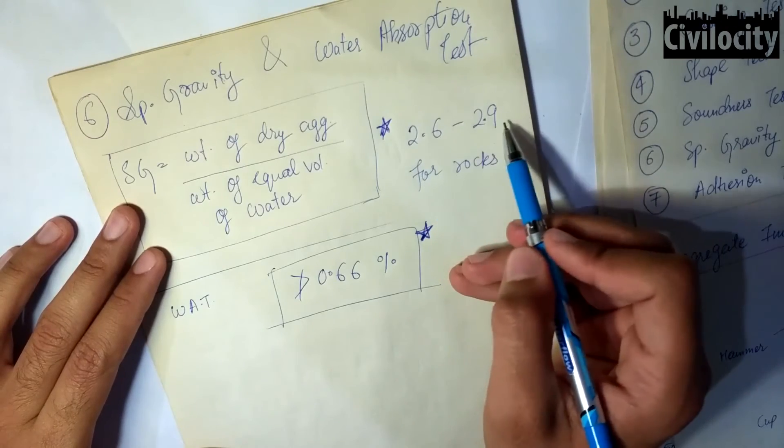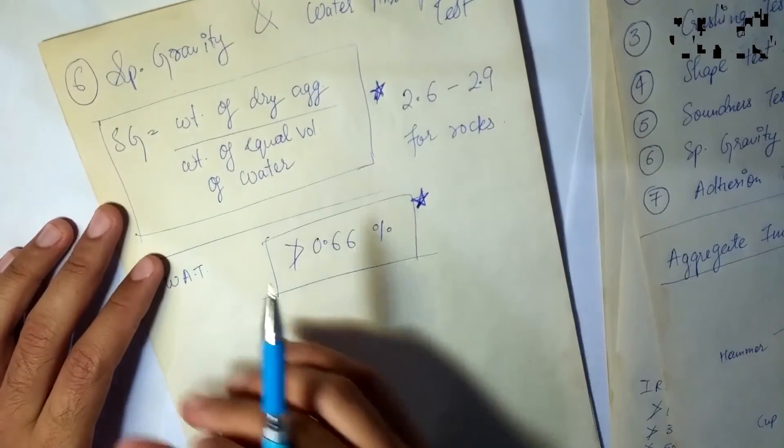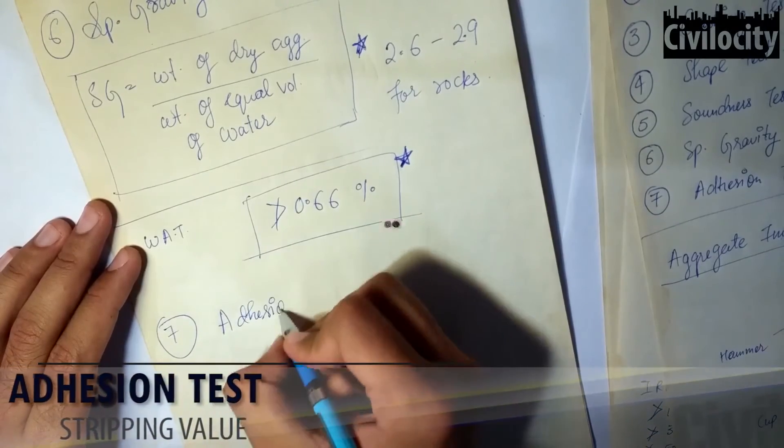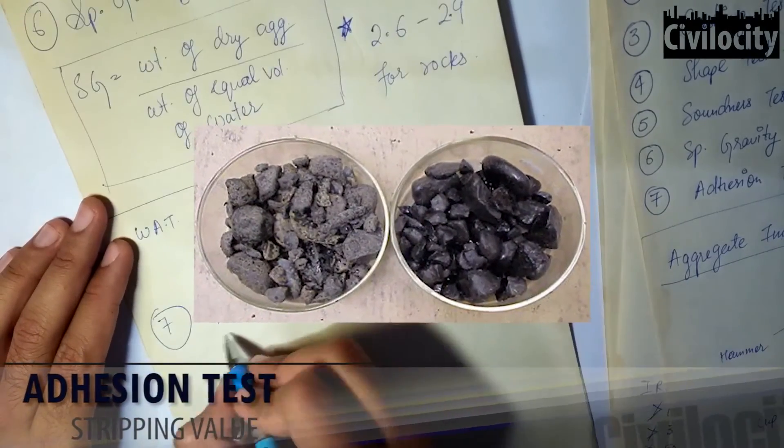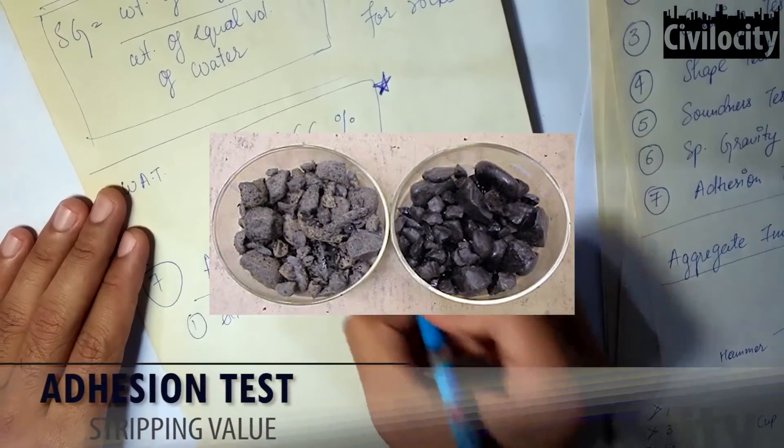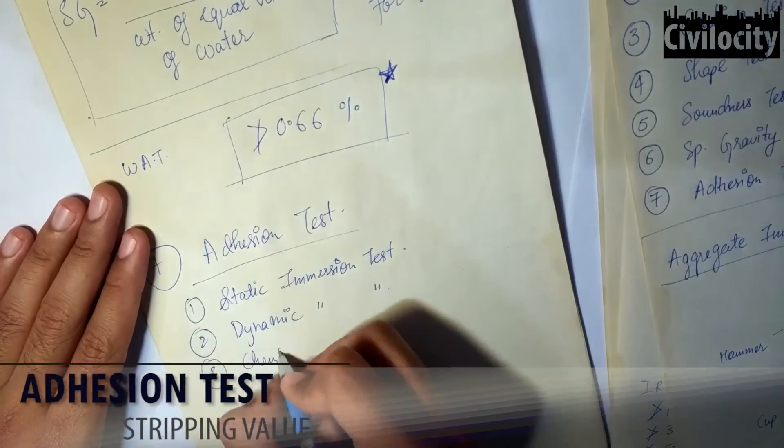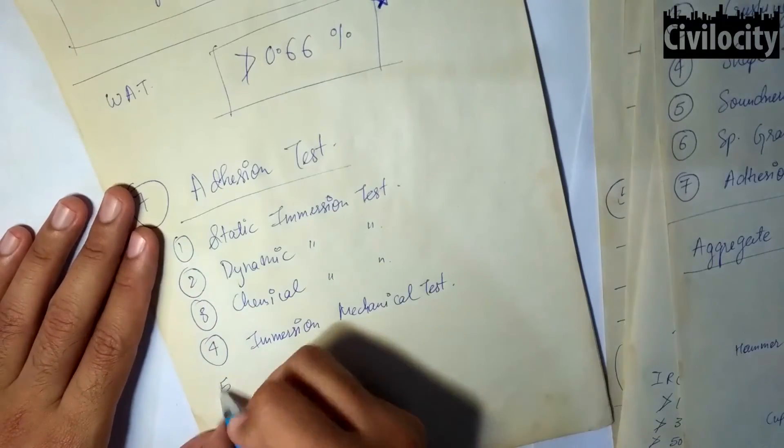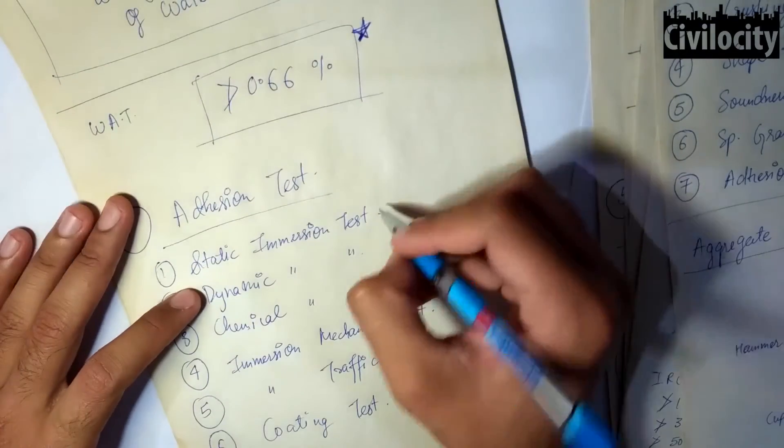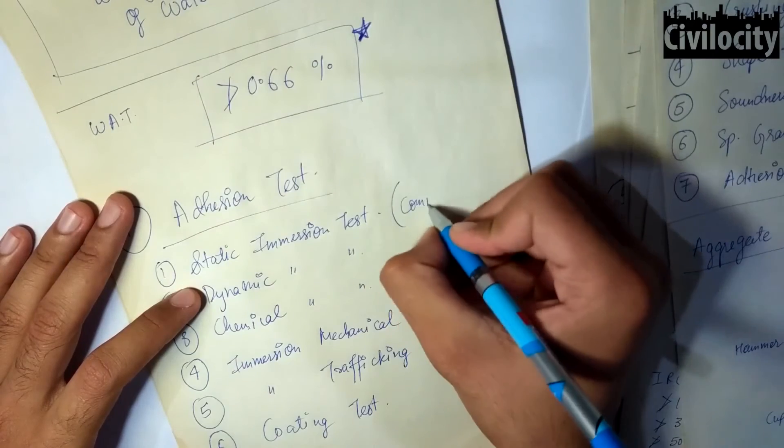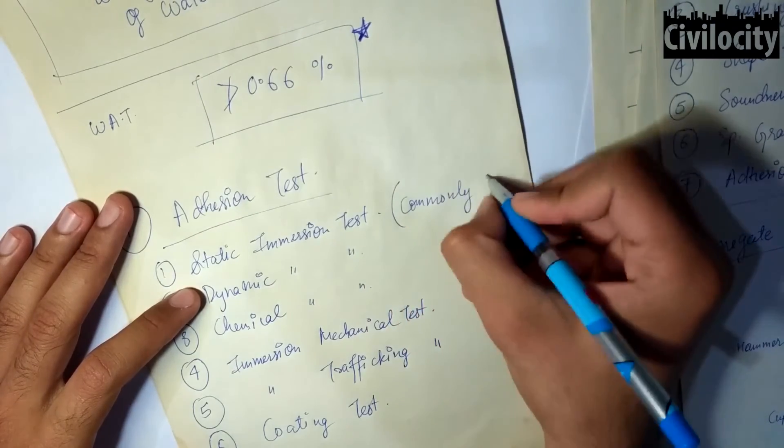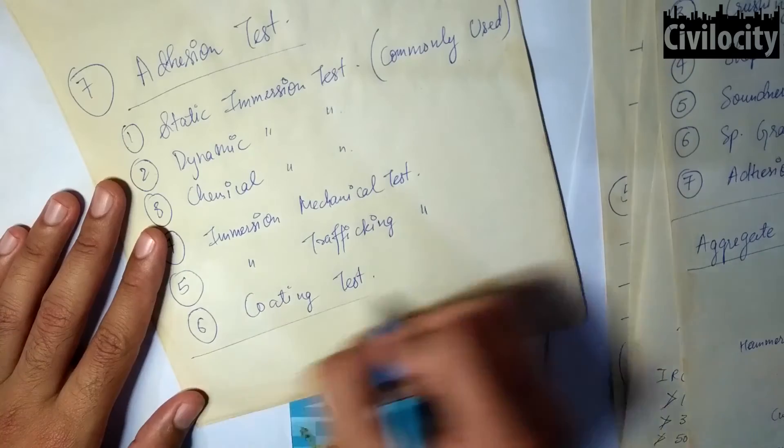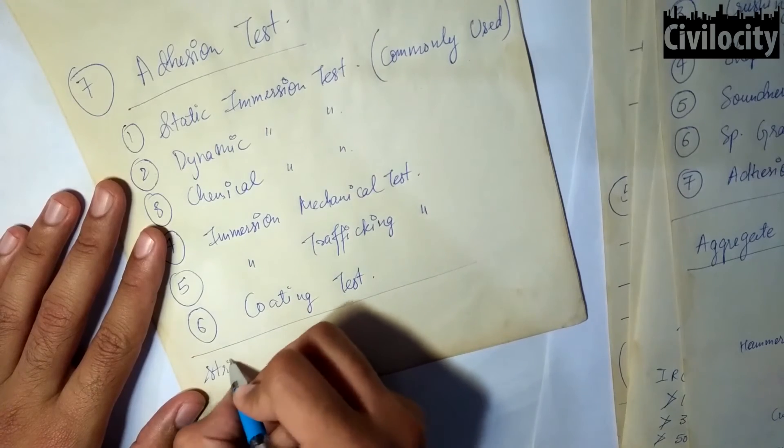Our last test is adhesion test. There are a number of adhesion tests that are used to find out the stripping value of aggregates, and the one that is commonly used is the static immersion test. We don't need to go into the depths of this test.